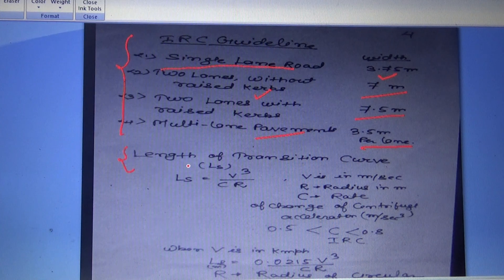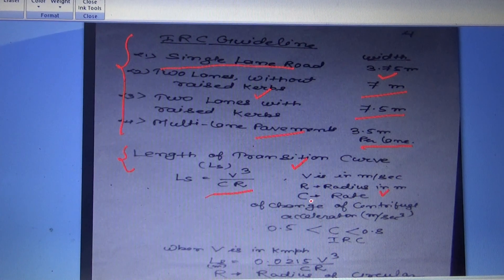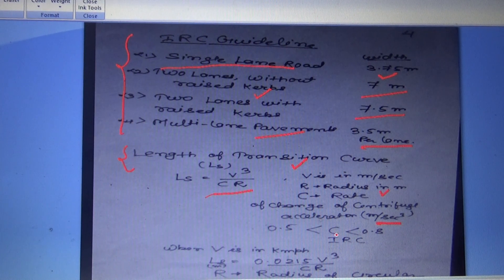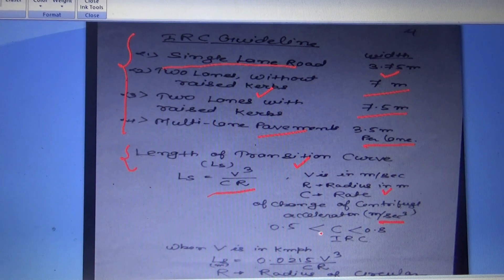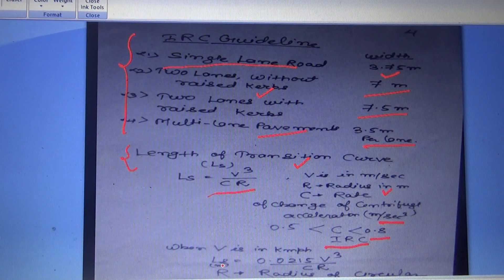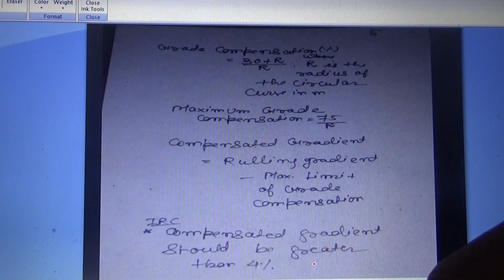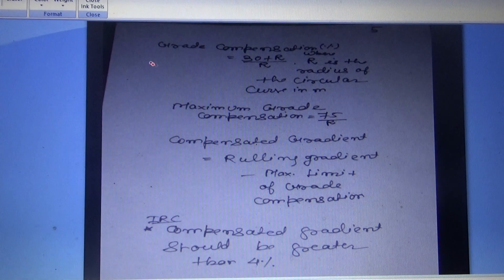The length of transition curve is given by L = V³ / CR, where V is in m/s, R is the radius in meters, and C is the rate of change of centrifugal acceleration in m/s³. The value of C should be between 0.5 and 0.8 as per Indian Road Congress. When V is in km/h, the formula becomes L = 0.0215V³ / CR.